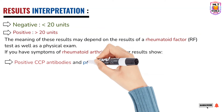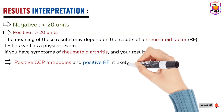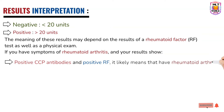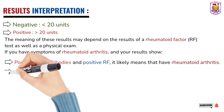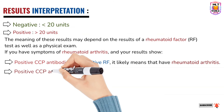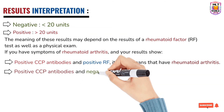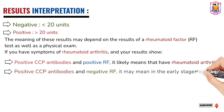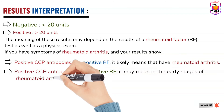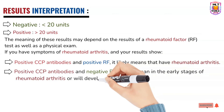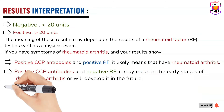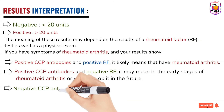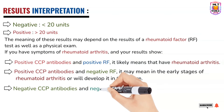If the anti-CCP test is positive and the rheumatoid factor test is also positive, it indicates the presence of rheumatoid arthritis. If the anti-CCP test is positive but the rheumatoid factor test is negative, it means the patient is in the early stage of rheumatoid arthritis. If both the anti-CCP test and the rheumatoid factor are negative, there is less indication of rheumatoid arthritis and further investigation is needed to find the cause of the patient's joint pain or swelling.